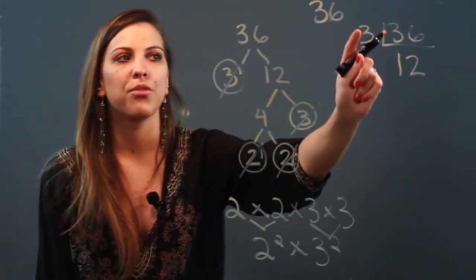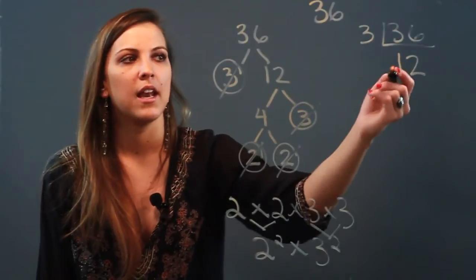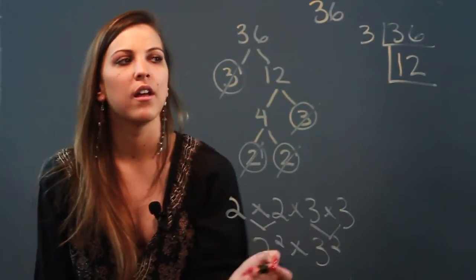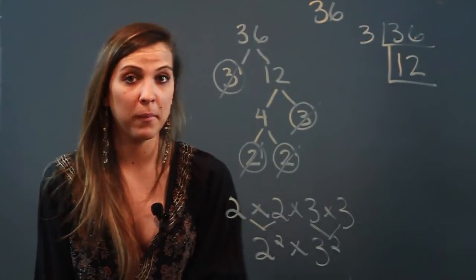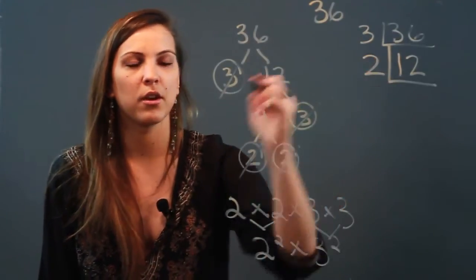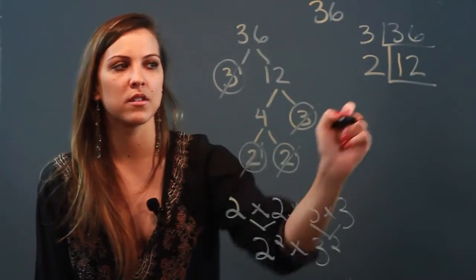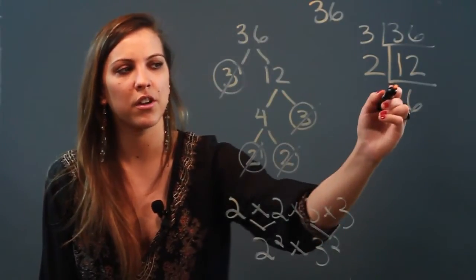You wrote the number out, put an upside down division bar, thought of a prime number that goes into it and divided it. Now draw another step to your division ladder. Think of a prime number that can go into 12. The number that comes to mind for me is 2, so I'm going to write a 2 out here. 2 goes into 12 six times.